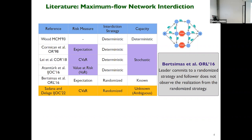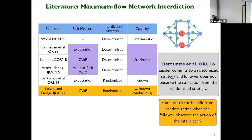In our paper, we look at a different problem. We assume that the capacities of the arcs are not known, which is more realistic than assuming the distribution is known. The interdiction strategy is assumed to be randomized, and the risk measure is conditional value at risk. We ask the question: can the interdictor benefit from randomization when the follower can observe the action of the interdictor? And the answer is yes.